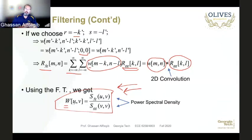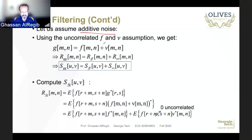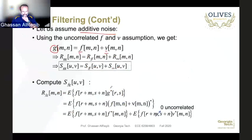Next, we make some assumptions on the relationship between f and g and use that to simplify the Wiener filter. The first one: let's assume we have additive noise, meaning our observation signal g is equal to the original image f plus noise n. This is a special case, and what we will do is see how we can simplify the general Wiener filter expression under this condition.